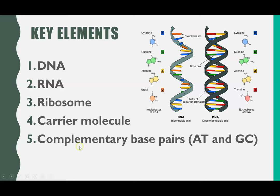When we look at the whole process, there are 5 other key parts to be aware of: DNA, RNA, ribosomes, carrier molecules, and complementary base pairing. We're going to quickly go through those key elements, then we'll see the whole process of protein synthesis.